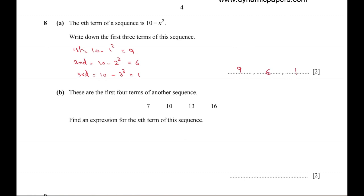These are the first four terms of another sequence. We will have to know the type of this sequence. We have to find the difference between each consecutive term. 10 minus 7 equals 3, 13 minus 10 equals 3, 16 minus 13 equals 3.